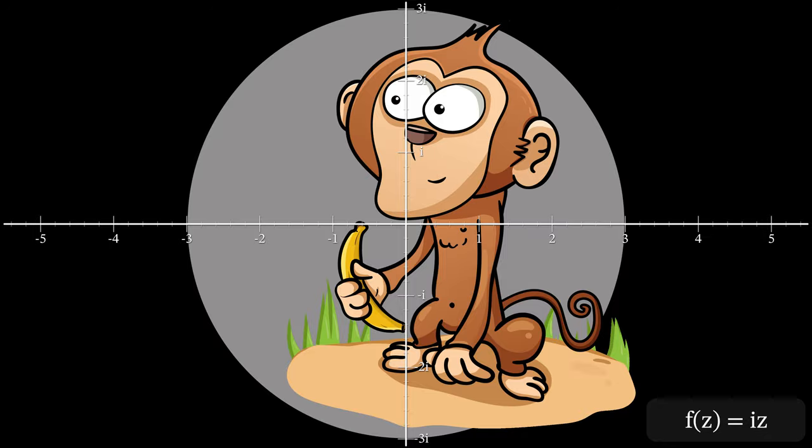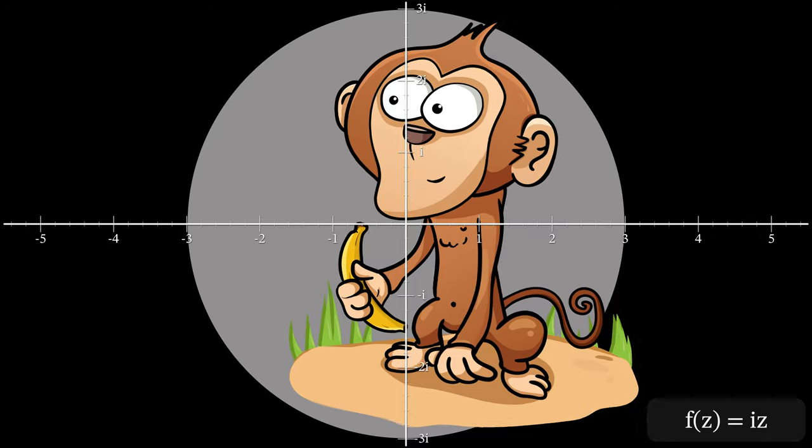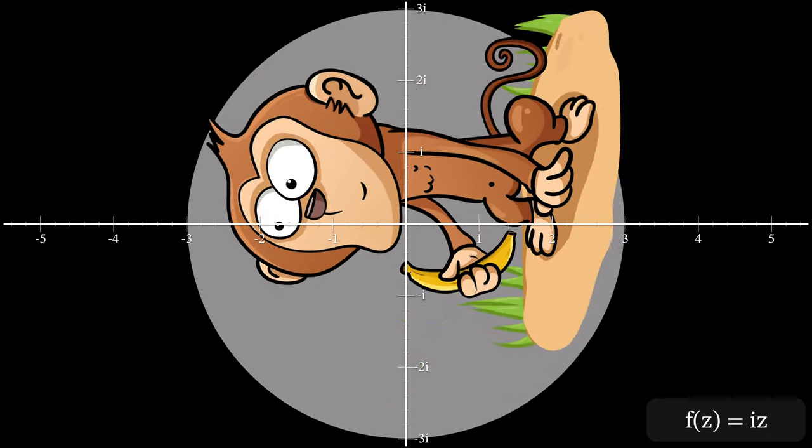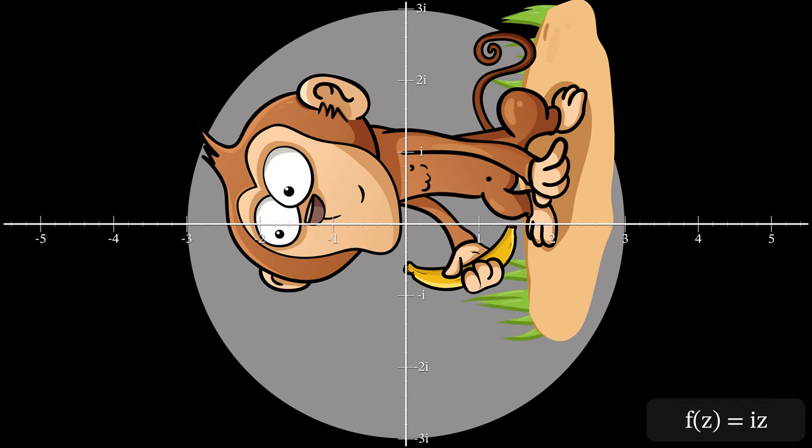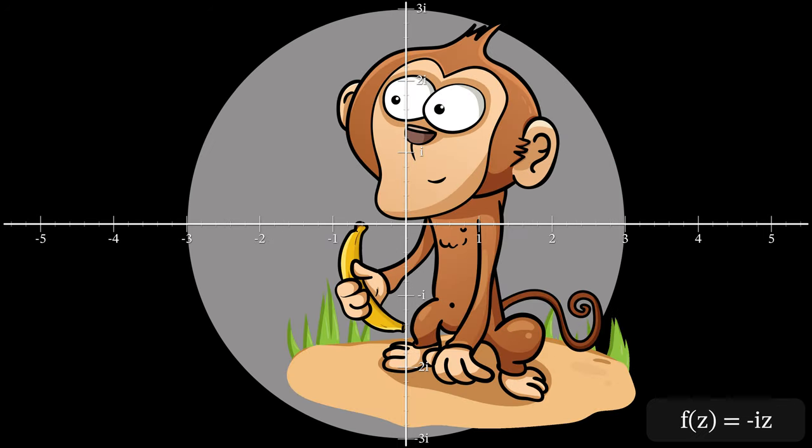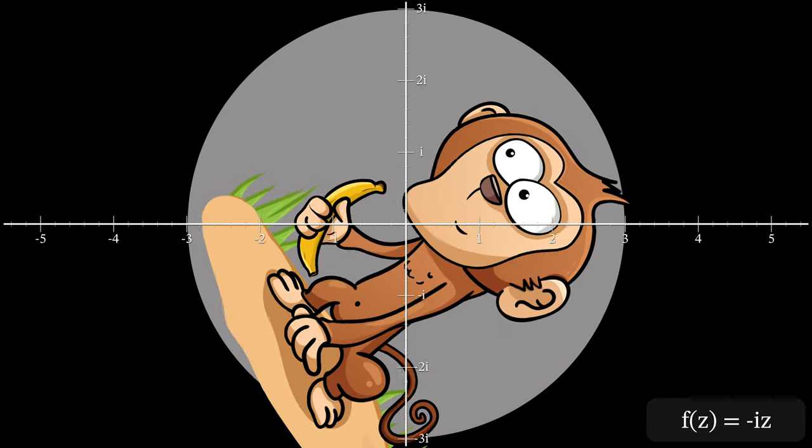Instead of spots let's just use the pixels in an image. Now let's try one more function f of z equals minus iz. Our image rotates negative 90 degrees.